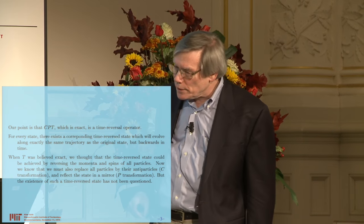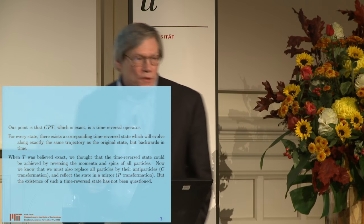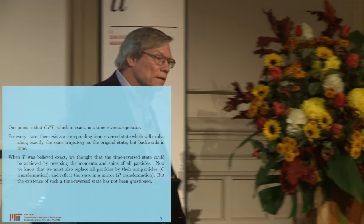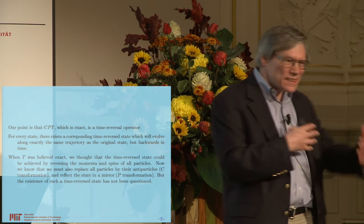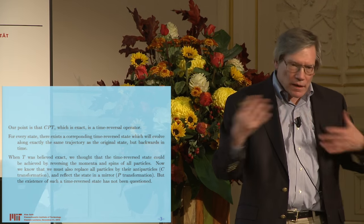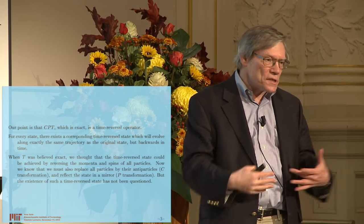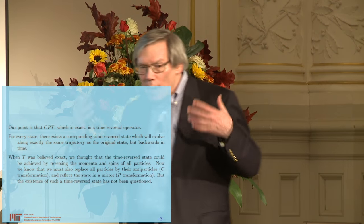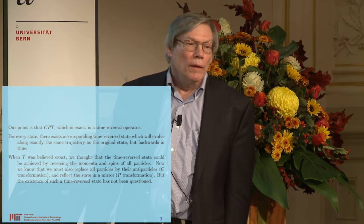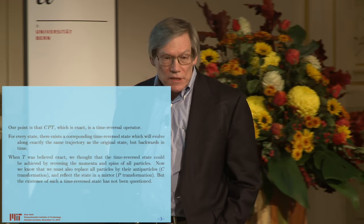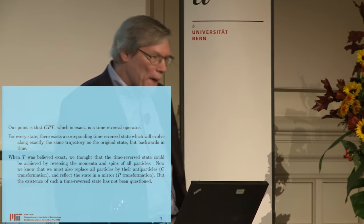So as long as we're willing to accept CPT as the time reversal operator that is exact in nature, we can say that nature really is exactly invariant between the future and the past — which amplifies this problem. Why is it that the world around us doesn't seem to have that symmetry at all, but has a very distinct arrow of time in which the future is very different from the past?